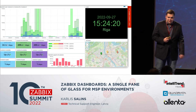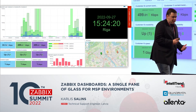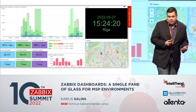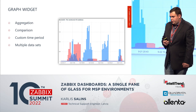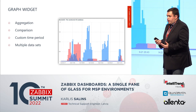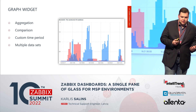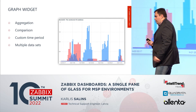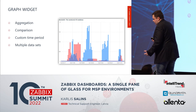This is something I've come up with — a dashboard for three customers, the three biggest ones. You can see a graph, some interesting values, and also where they are geographically located. How to create something like this? Start with graphs. On graphs you can put aggregations, comparisons, and custom time periods — so you can compare data from one week ago or one year ago. You can use multiple data sets. In the graph, you can see bandwidth for this week compared to last week's.